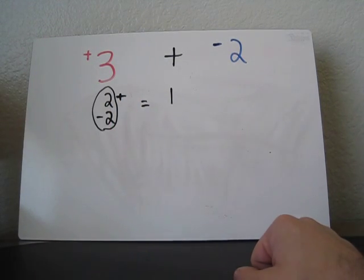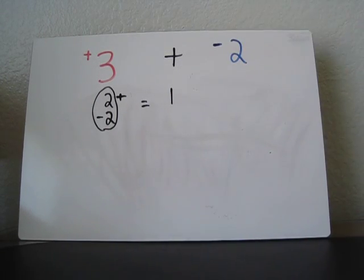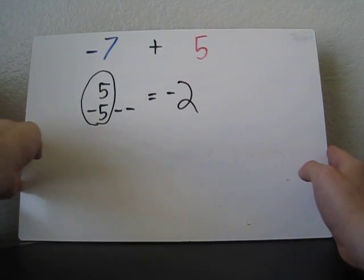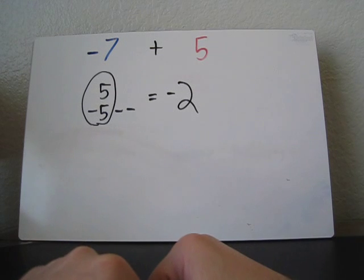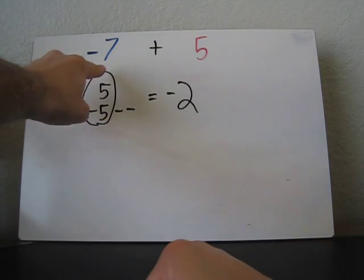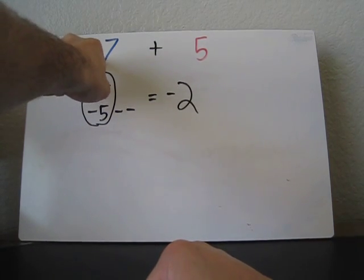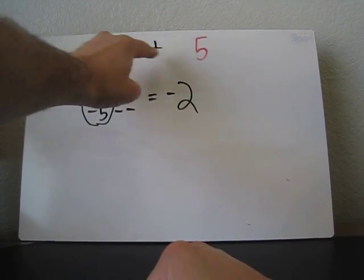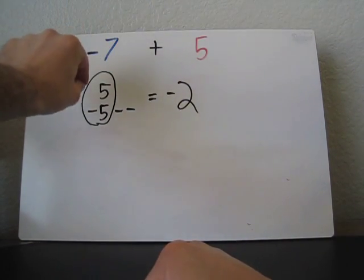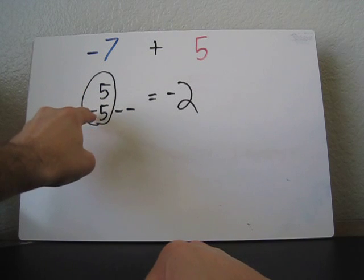Let me show you another example. Here's negative 7 plus 5 again. So we know that there's a negative 5 in here, and there's a 5 here. So we can match them up, man-on-man action, 5 and negative 5.